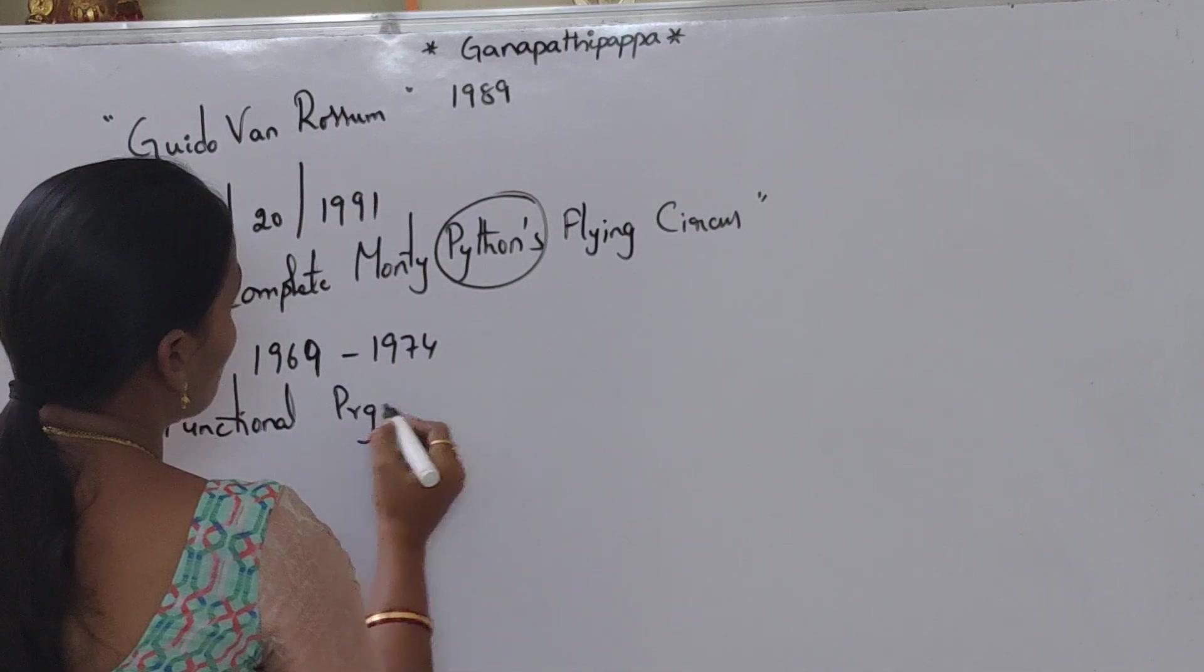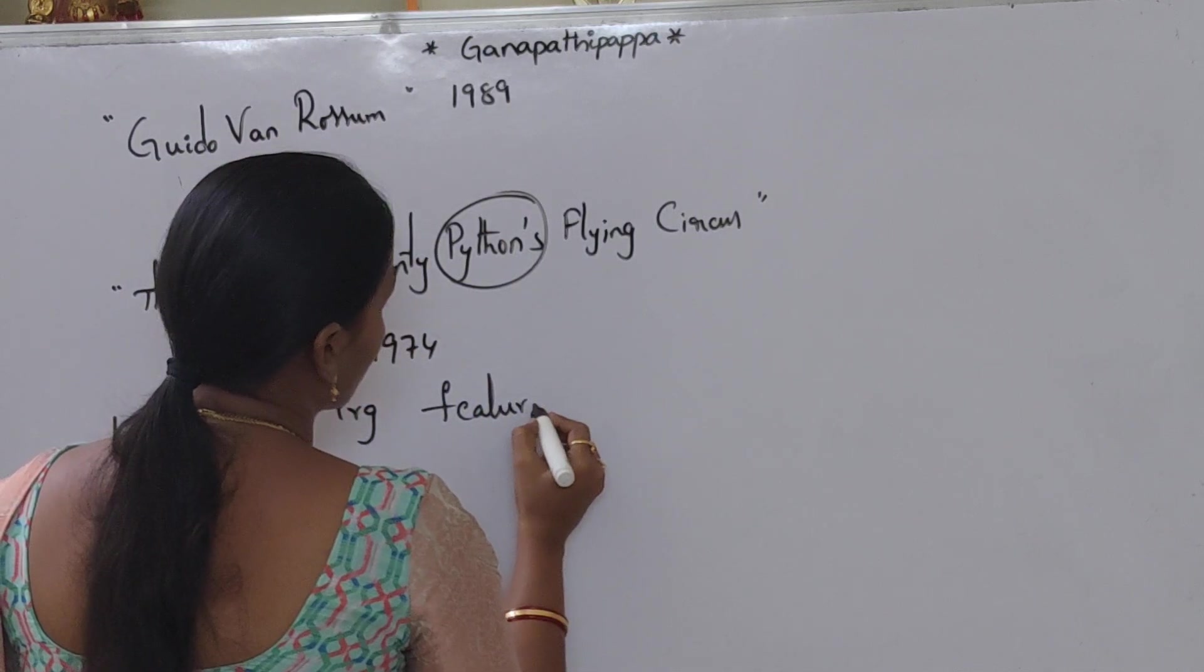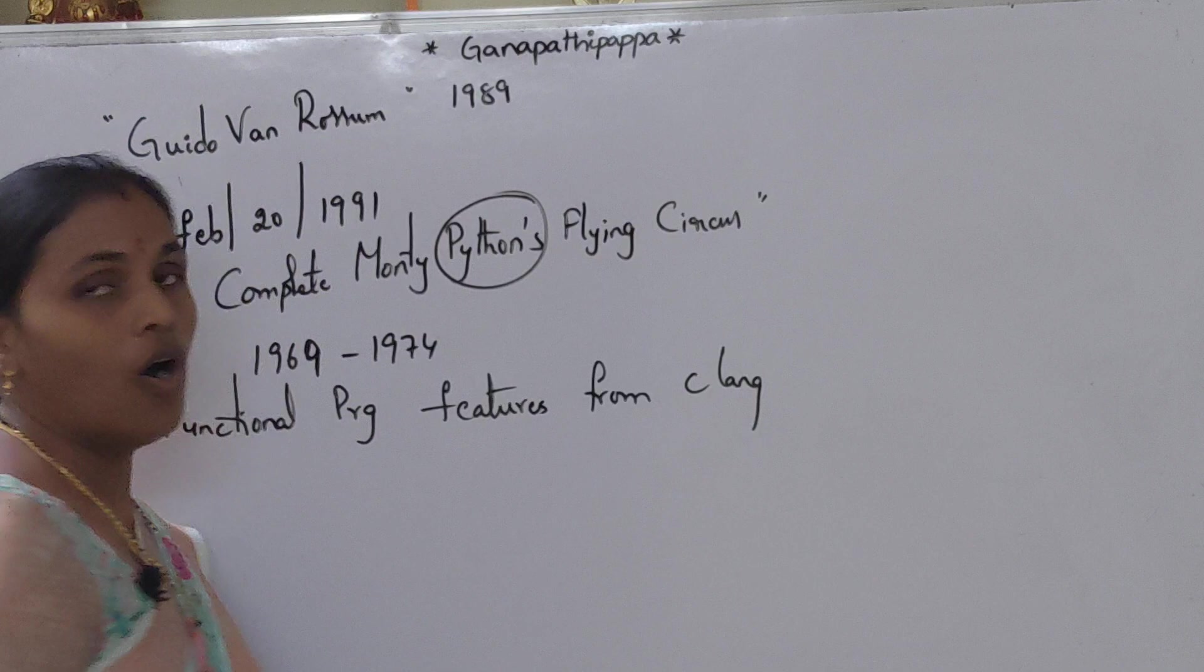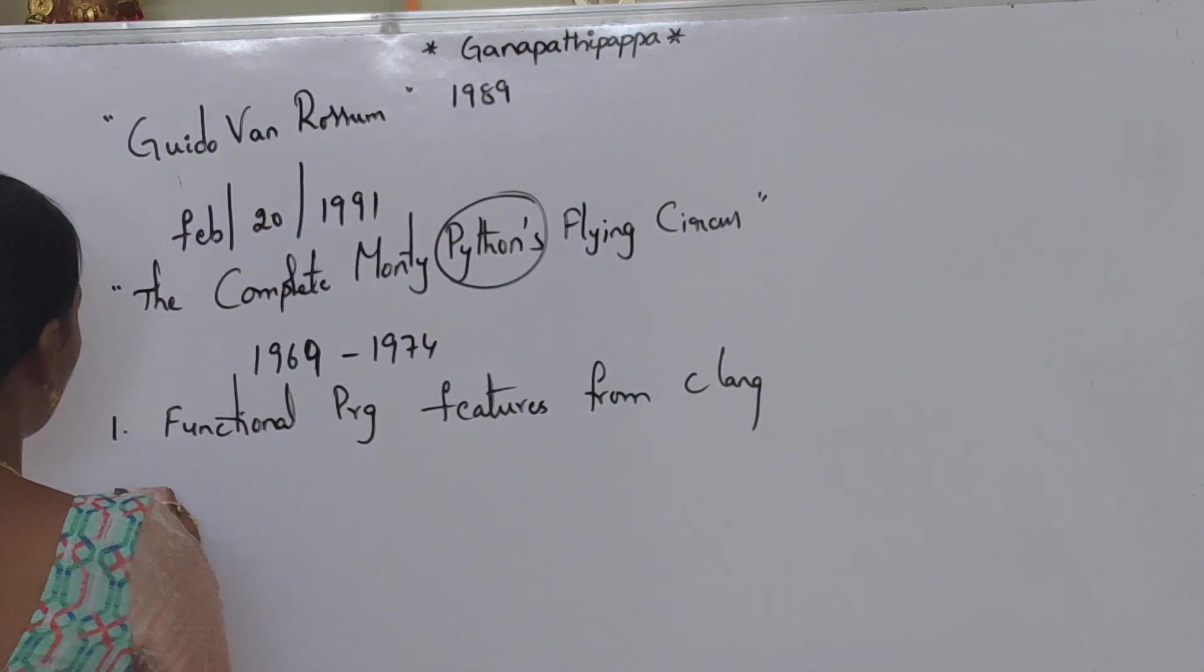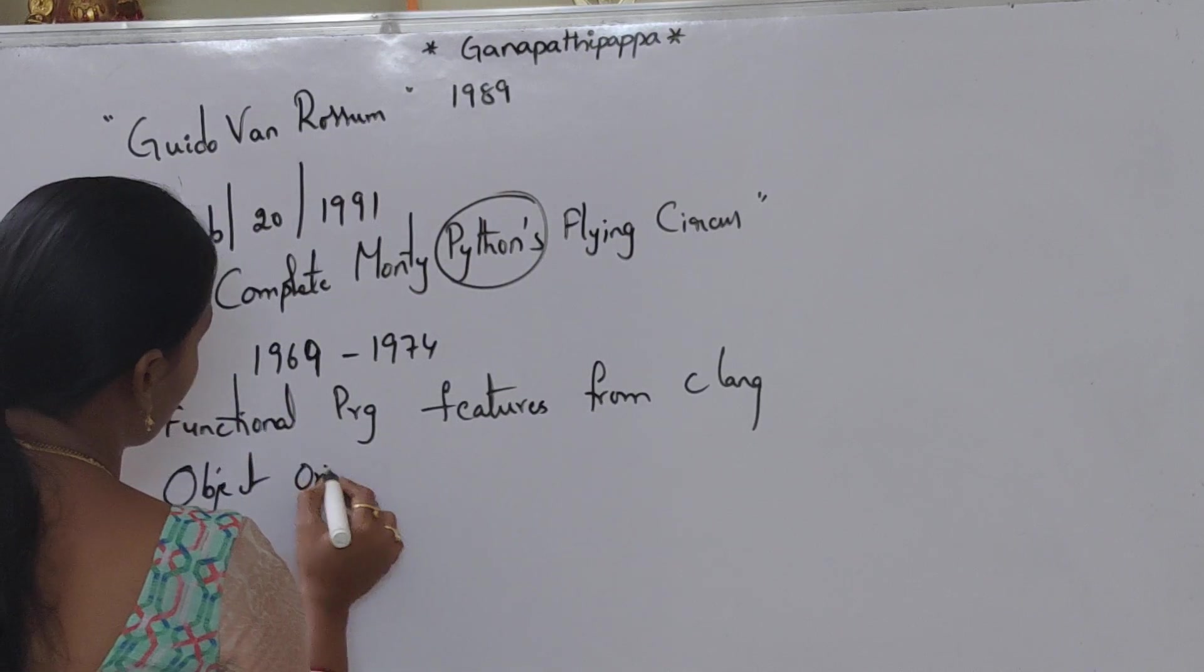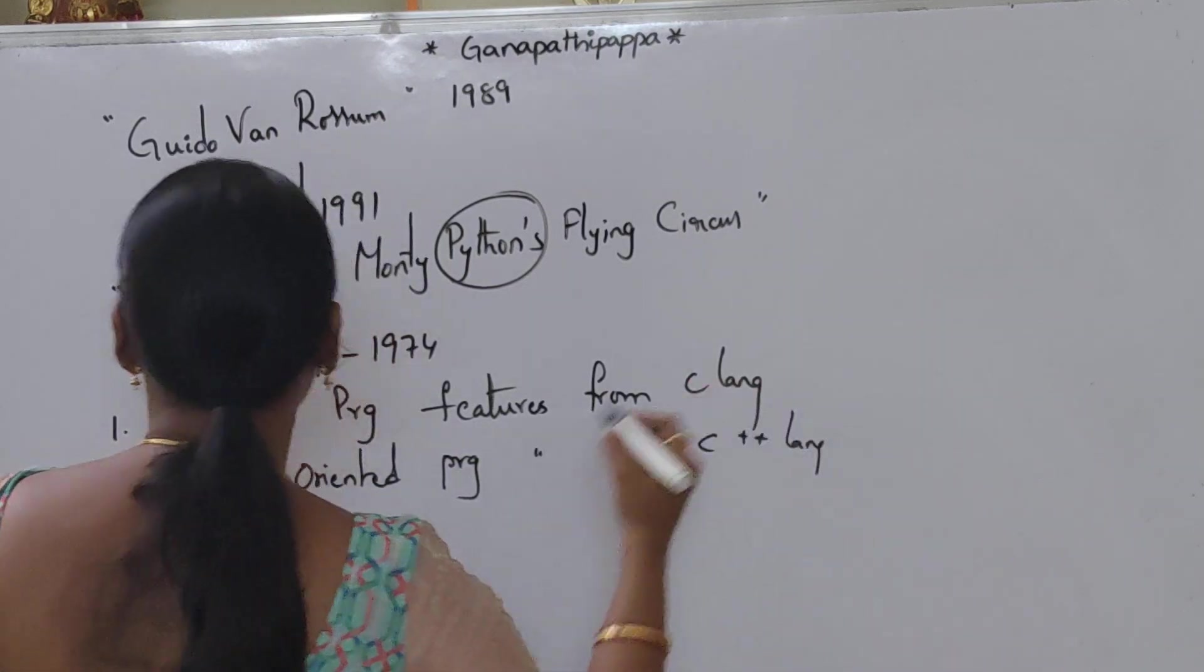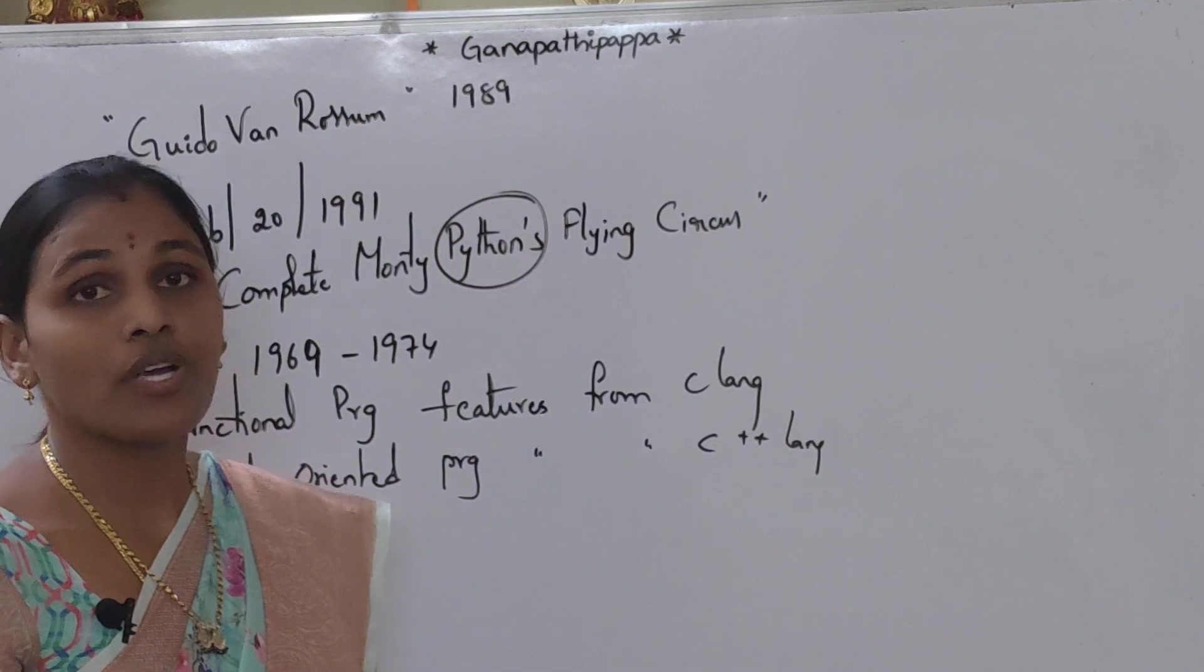Functional programming features from C language. Object-oriented programming features from C++ language. And scripting features from Perl and Shell script.